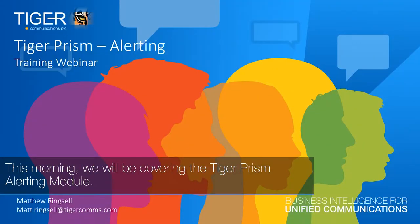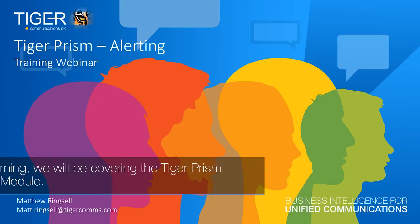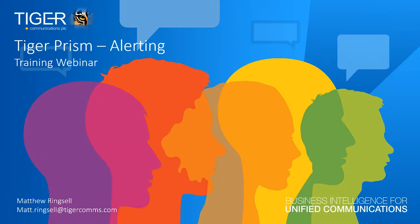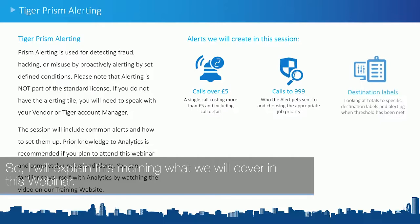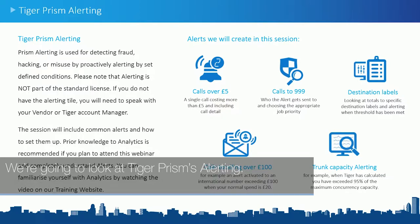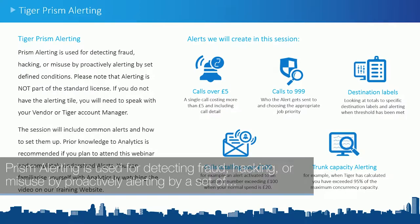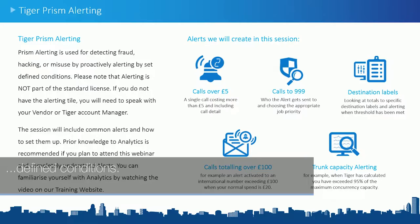This morning we will be covering the Tiger Prism alerting module. We're going to look at Tiger Prism's alerting, which is used for detecting fraud, hacking, or misuse by proactively alerting based on a set of defined conditions.